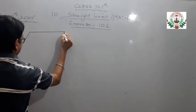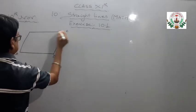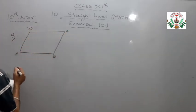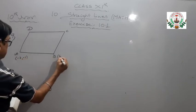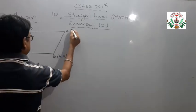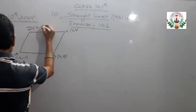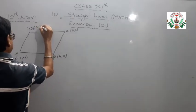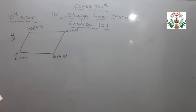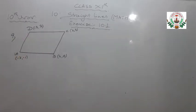First we draw a parallelogram A, B, C and D. The vertex coordinates are: A is (-2, -1), B is (4, 0), C is (3, 3), and D is (-3, 2). So a parallelogram is given whose vertices are these four points, and we have to show that they are the vertices of a parallelogram.